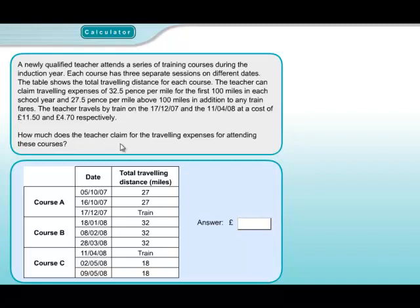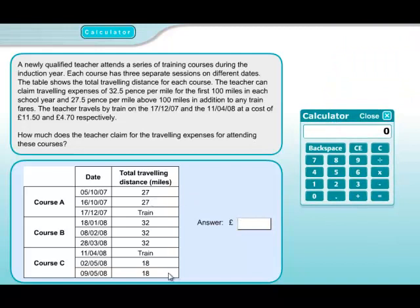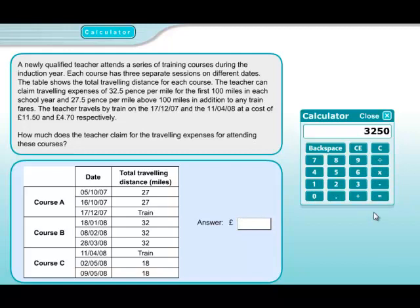Let's bring our calculator back and add up the number of miles travelled: two lots of 27 is 54, three lots of 32 is 96, and two lots of 18 is 36. So the total miles travelled in the year was 186. The rule says they'll pay for the first 100 miles at 32.5 pence. So it's 32.5 times 100 = 3250 pence, divided by 100 = £32.50.